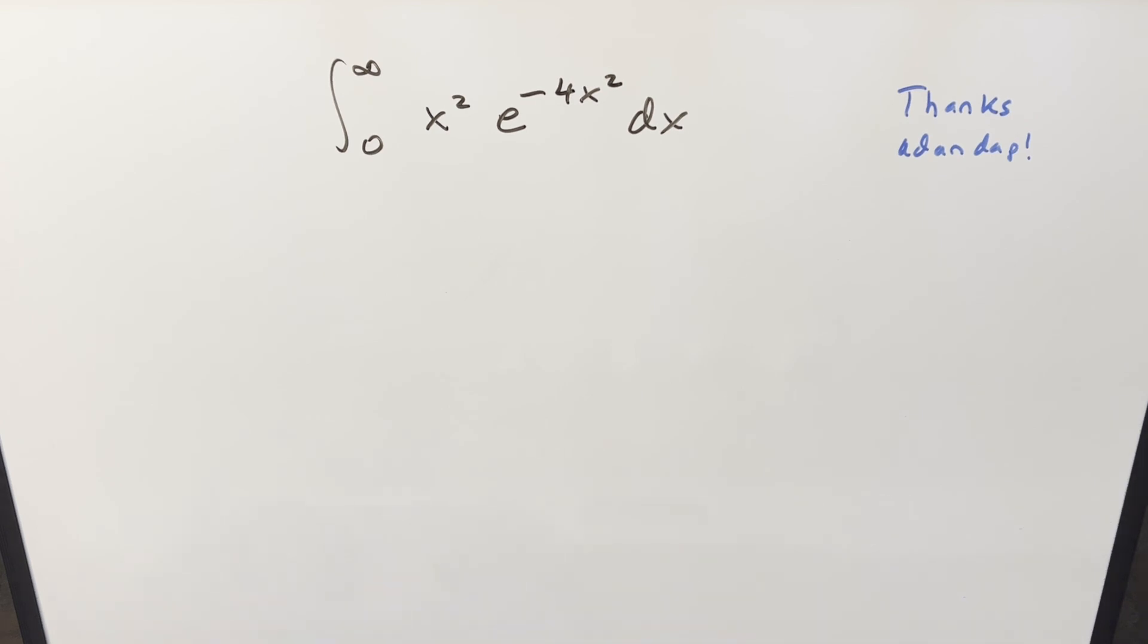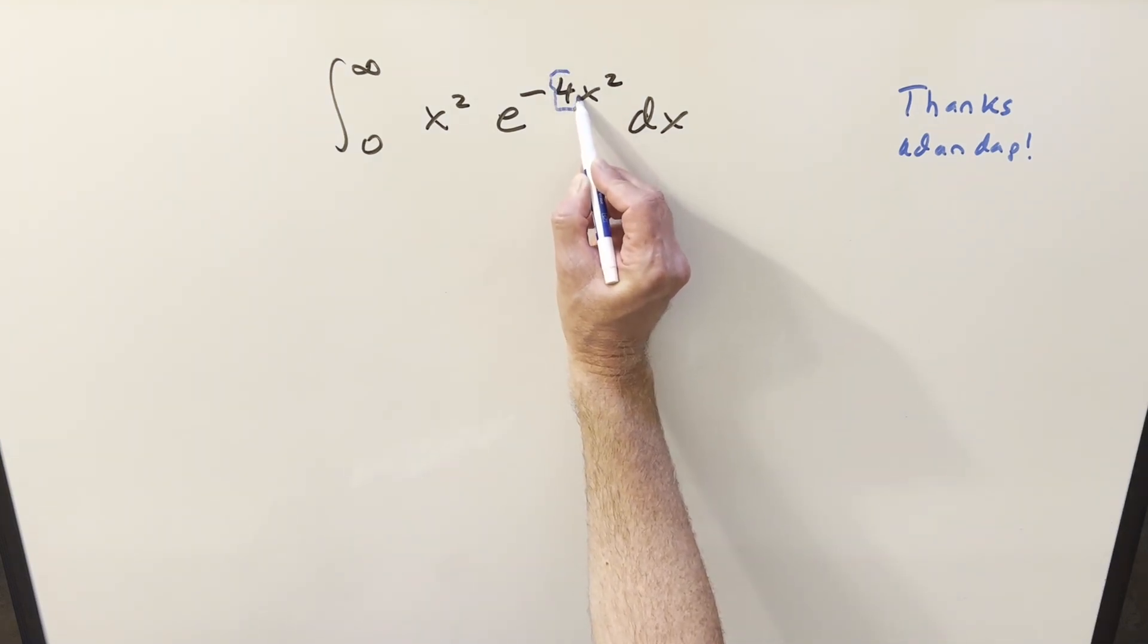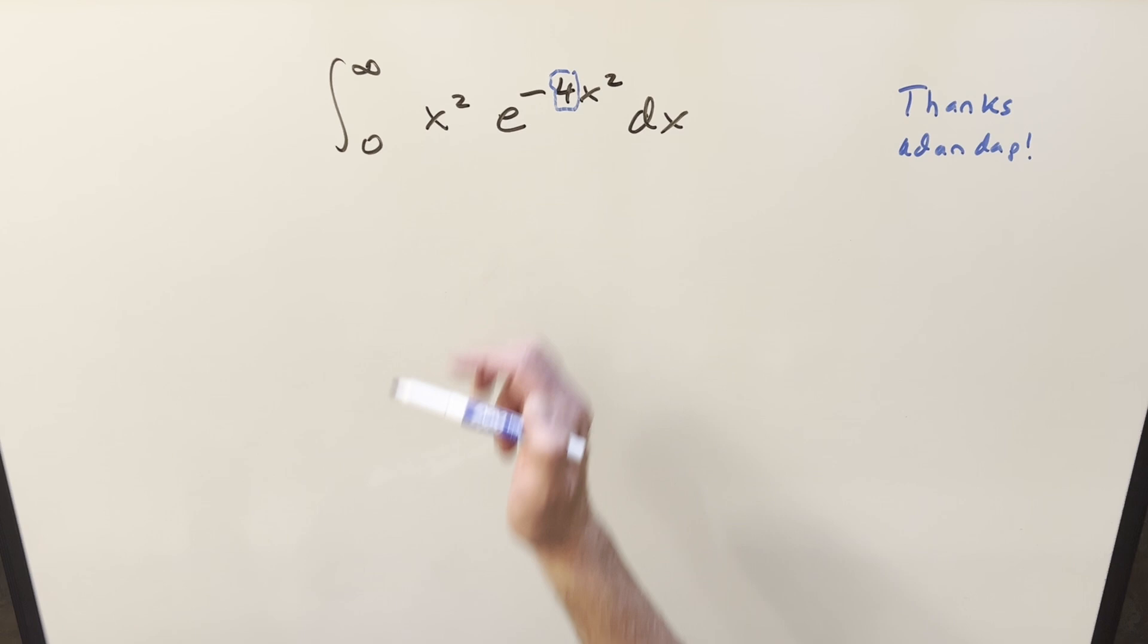Okay, we've got an interesting integral. We've got the integral from 0 to infinity of x squared times e to the minus 4x squared dx. We had an interesting suggestion in the comments the other day from Dan Dapp on this one. The problem, I did change it a little bit. I mean, this was actually part of another problem. And also what I did was I decided to multiply in a 4 here. Originally in the one we did in the other video, it was just a 1. Just thought this might make it a little more interesting.